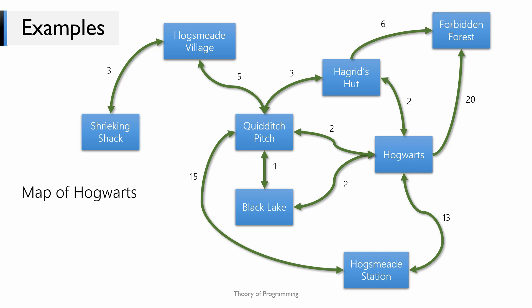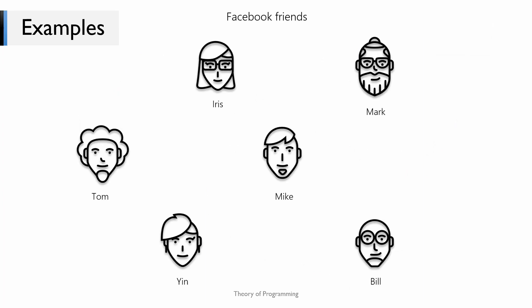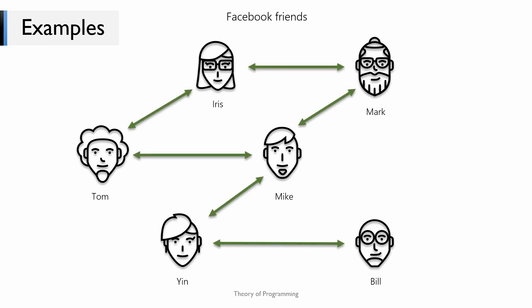Let's say for some reason you can go to the Forbidden Forest but you can't come back — in such cases the edges are uni-directional in nature. Another example would be Facebook. Let's say we have a group of six people where each person would be a vertex in our graph. The edges represent the friendship relation between them, so the edge between Tom and Mike means that Tom is a friend of Mike and Mike is also a friend of Tom.